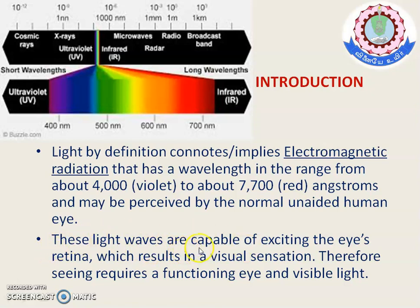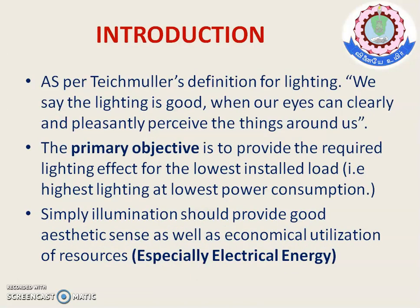These light waves are capable of exciting the retina of our eyes. To excite our eye retina, we need a certain pattern of light sources — just as you need a minimum voltage to excite a diode. That pattern of light results in our usual visual sensations. As per the definition for lighting, lighting is good when our eyes can clearly and pleasantly perceive things around us, without straining our eyes. That is the ultimate aim.